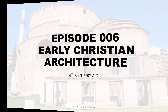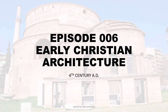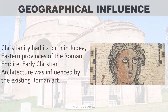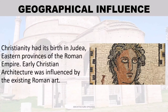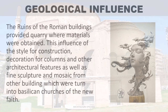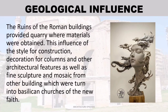Episode 6: Early Christian Architecture from the 4th century AD. Geographical influence: Christianity had its birth in Judea, in the eastern provinces of the Roman Empire. Early Christian architecture was influenced by the existing Roman art.